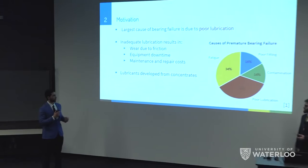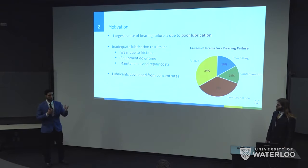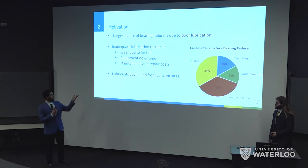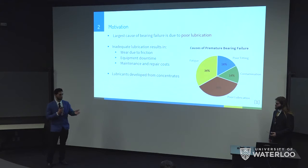Lubricants play a major role in protecting surfaces from wear, and this effect is particularly important in mechanical components such as conveyor chains and ball bearings. In fact, the largest cause of bearing failure is due to poor lubrication. This leads to wear, equipment downtime, and high undesired repair costs. To combat these problems, people use high performance lubricants, which are often made from specially formulated concentrates — but there's a problem with those concentrates.